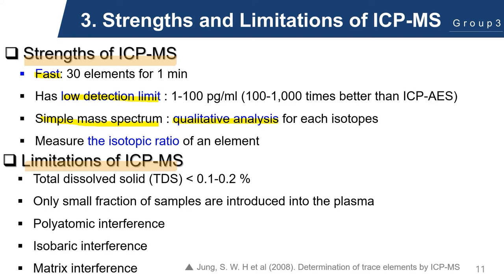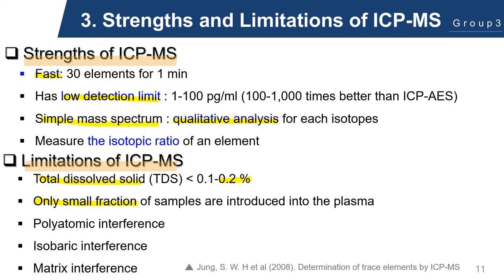Nonetheless, as is the case with any other technique, the ICP-MS also has its trade-offs. One of its most notable limitations is that the total dissolved solid should be limited to less than 0.2%, to ensure that the spray chamber is not clogged by a large influx of aerosols. As a result, only a small fraction of samples can be introduced into the plasma. Then there is the issue of interference. Polyatomic interferences stem from two or more species which combine to give the same atomic mass of a substance that we are interested in.